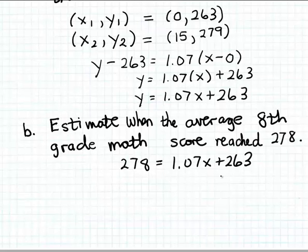Okay, so this is a fairly easy equation to solve. I'm just going to first subtract 263 from both sides of the equation. And so when I do that, I get 1.07 times x is equal to 15, because 278 minus 263 is 15.